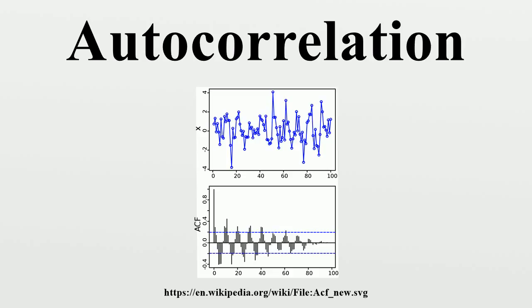In statistics, the autocorrelation of a random process describes the correlation between values of the process at different times, as a function of the two times or of the time lag.